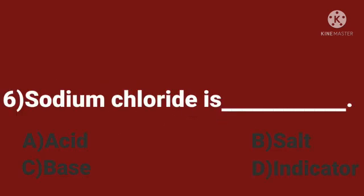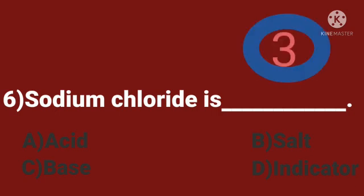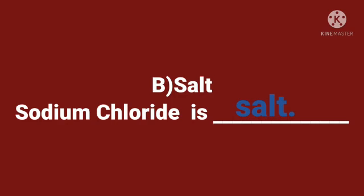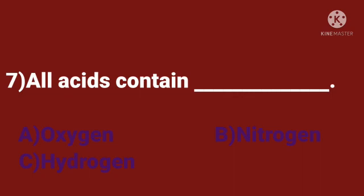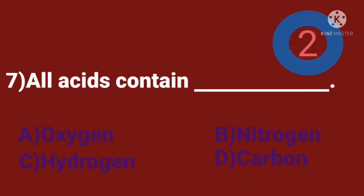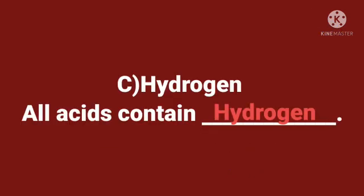Sixth question. Sodium chloride is dash. A. Acid. B. Salt. C. Base. D. Indicator. Time starts now. The answer is salt. Sodium chloride is salt. The formula of sodium chloride is NaCl. All acids contain hydrogen.